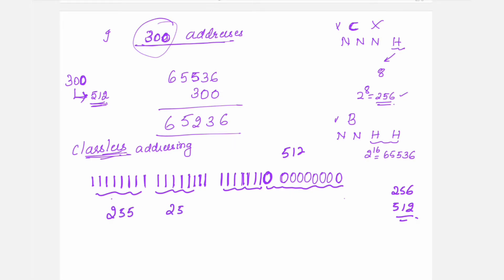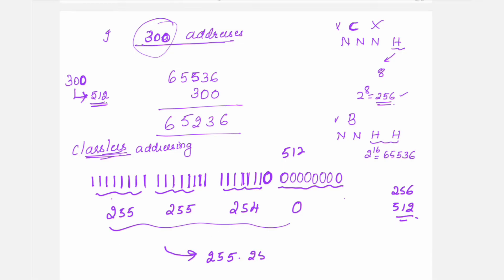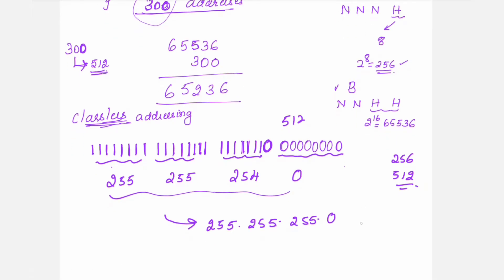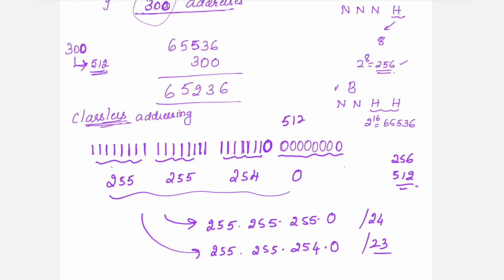The new subnet mask will be 255.255.254.0. In slash notation, this will be /23 because 23 bits are denoting the network part. If it were a Class C address, it would be 255.255.255.0 with slash notation /24, because 24 bits denote the Class C network. But now I have modified the subnet mask to 255.255.254.0, so in slash notation it becomes /23.